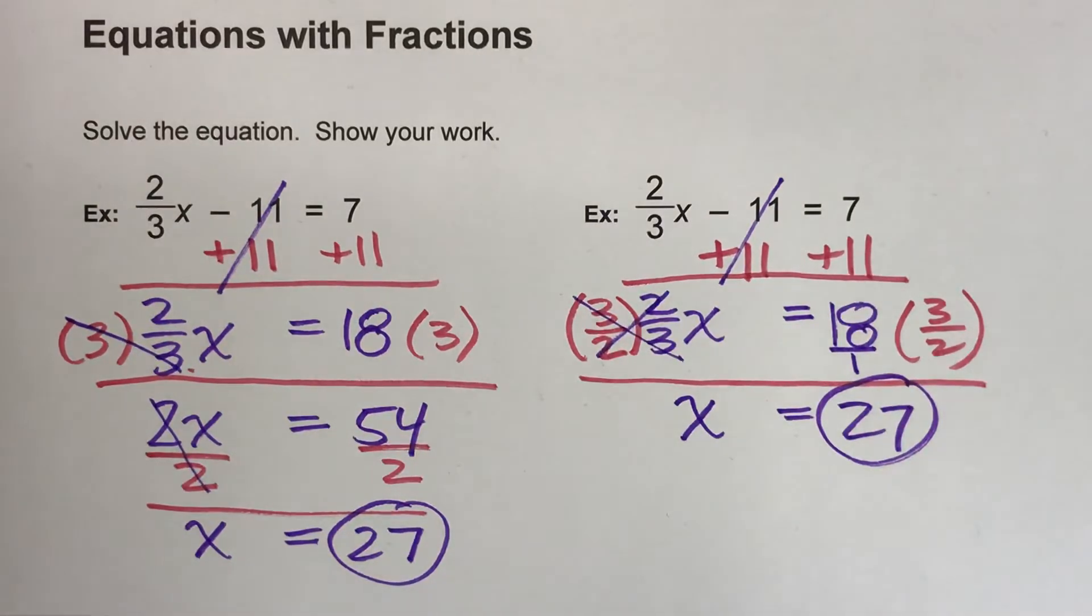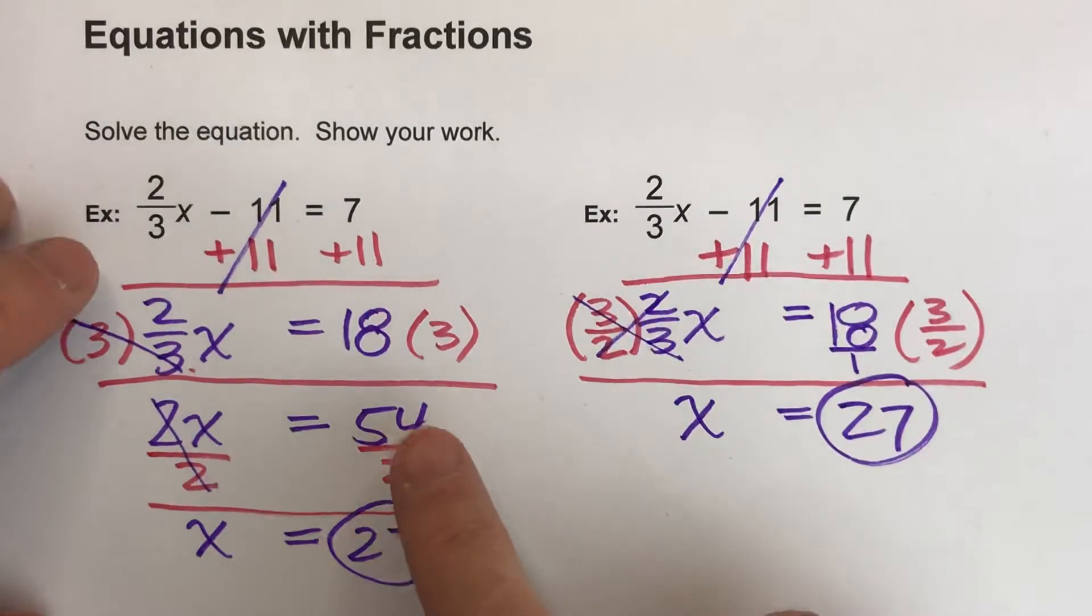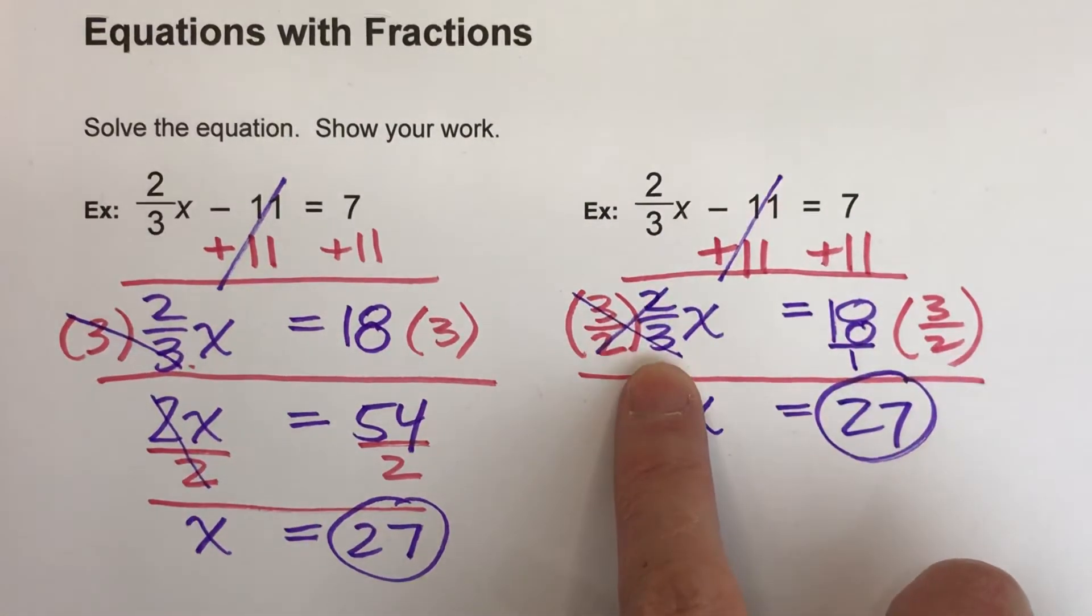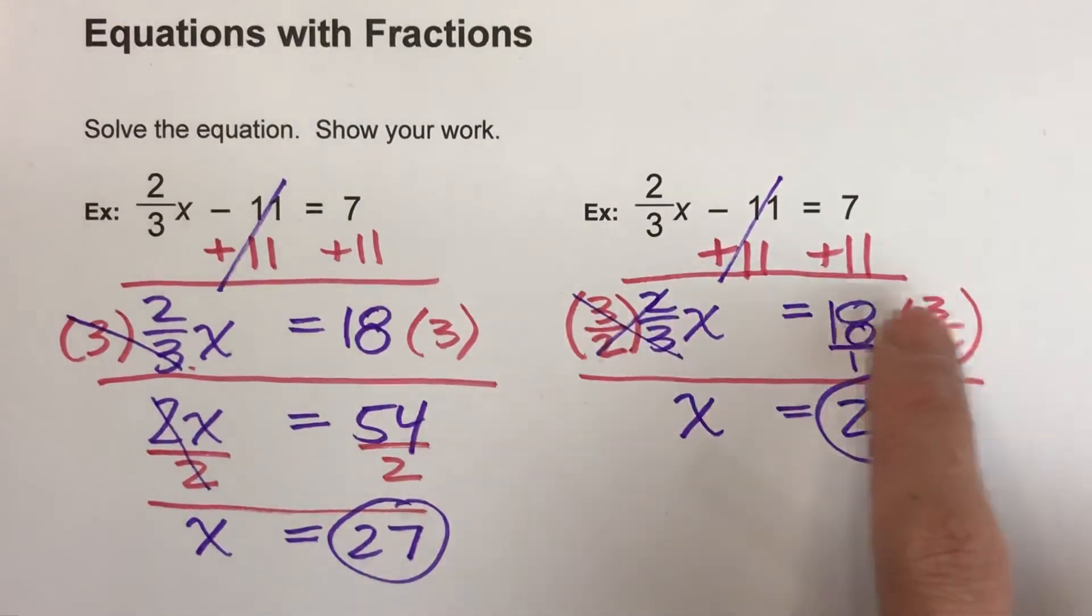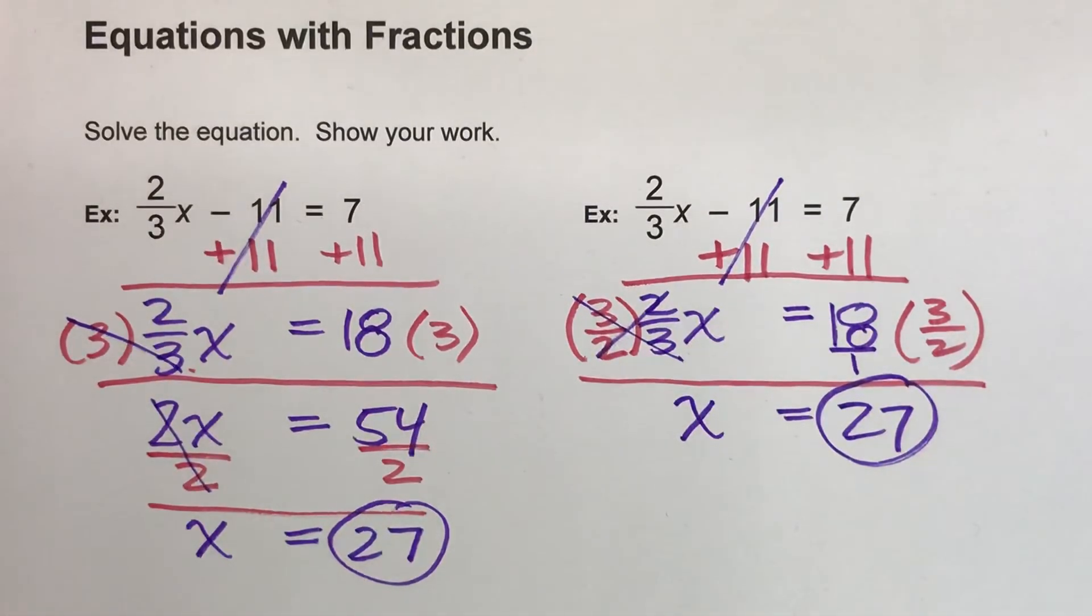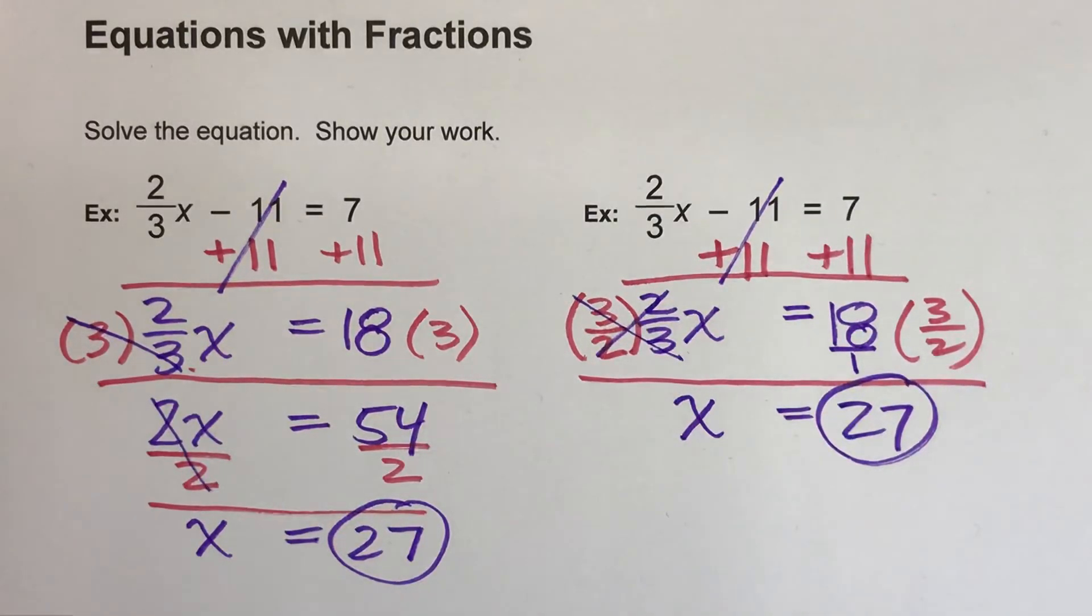So there's two different ways to solve the same equation. One by undoing the fraction in two steps, and the other way by undoing the fraction in one step by multiplying both sides by the reciprocal. So hopefully this helped you. If it did, please hit that like button. Also subscribe, because it really helps us out. With that being said, good luck on your math, and I will see you next time.